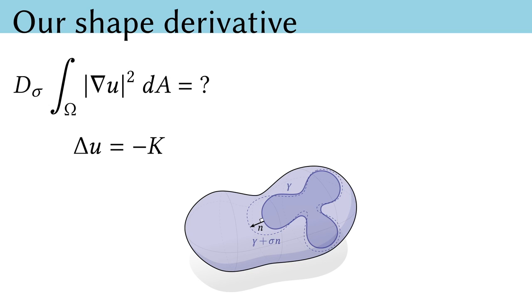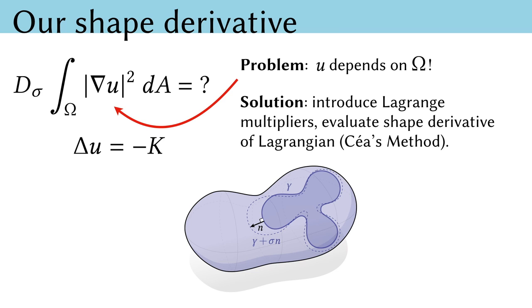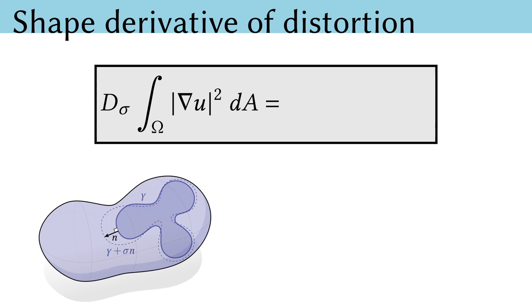So now back to our problem. We want to take the shape derivative of our distortion energy, but this is more challenging because the quantity inside the integral depends on the shape of the boundary itself, as captured by the Yamabe equation. With a bit more work, we can still evaluate the shape derivative by introducing Lagrange multipliers and showing that the shape derivative of Lagrangian is the shape derivative of the constrained problem. When the dust settles, we'll see that the shape derivative of distortion is given by an integral around the boundary of the partial derivative of distortion squared times sigma. We are really surprised at how simple this formulation turns out to be. We're able to evaluate the change in flattening distortion induced by perturbing a cut via a relatively simple formula, without ever actually computing a flattening.